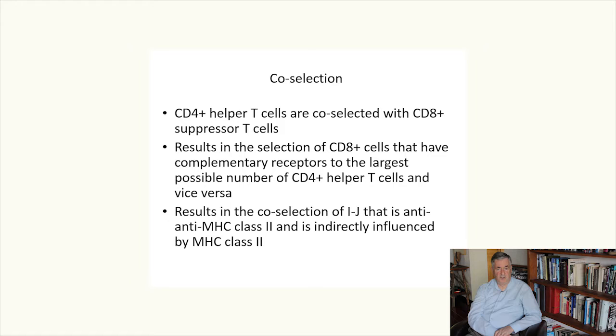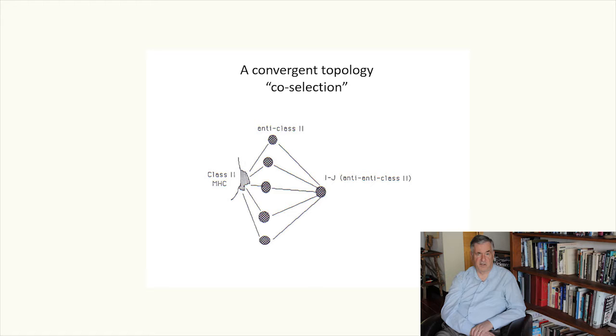And that results in IJ indirectly mapping to the region in the MHC complex where it is in fact found. So here we have it. The convergent topology resulting in the emergence of IJ as a serologically detectable determinant.